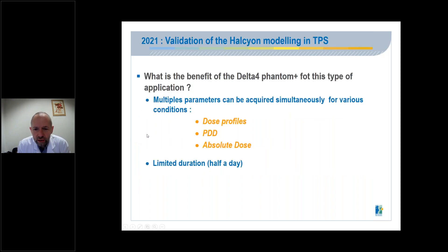In 2020, another application was the validation of the ancient modeling in TPS. What is the benefit of the Delta IV Phantom Plus for this type of application? First, multiple parameters can be acquired simultaneously for various conditions, such as dose profiles, PDD, absolute dose. Then, the time required for the application is limited, about half a day.